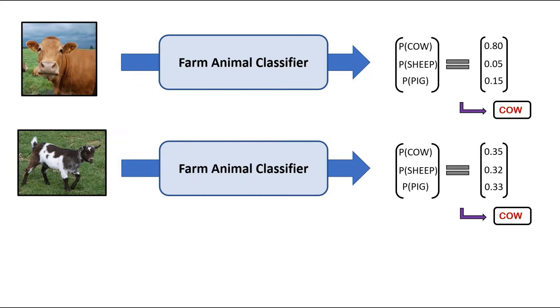In contrast, we can say the model is fairly confident about its prediction as a cow class probability in the first example, as the cow class probability is substantially larger than the probabilities assigned to the other two classes.